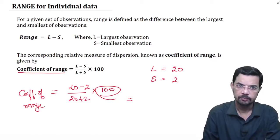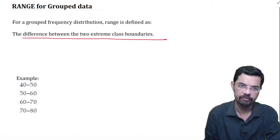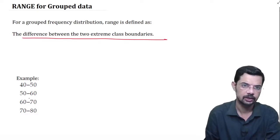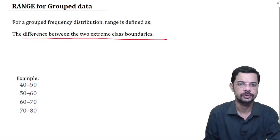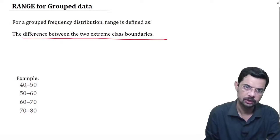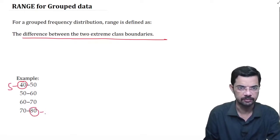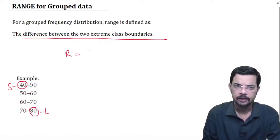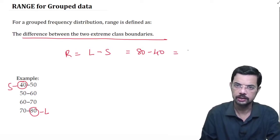Now we shall move on to grouped data. For grouped data, the range is defined as the difference between the two extreme class boundaries. For example, with a continuous frequency distribution where the classes are 40 to 50, 50 to 60, 60 to 70, 70 to 80 — the smallest class boundary is 40, taken as S, and 80 is taken as L. The range R is given by L minus S, which is 80 minus 40, equal to 40.